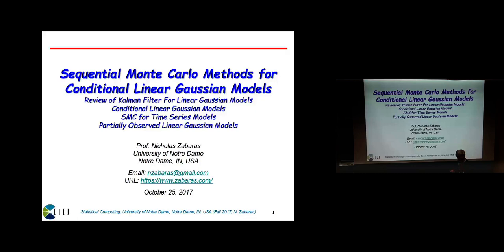I'll also briefly discuss how you can do sequential Monte Carlo when there are unknown parameters in your problem that you need to compute simultaneously with the state. These are static parameters and you still want to compute the state — this is the real problem, because in any dynamical system you don't really know what drives the dynamics. So how do you compute those at the same time as the unknown state?